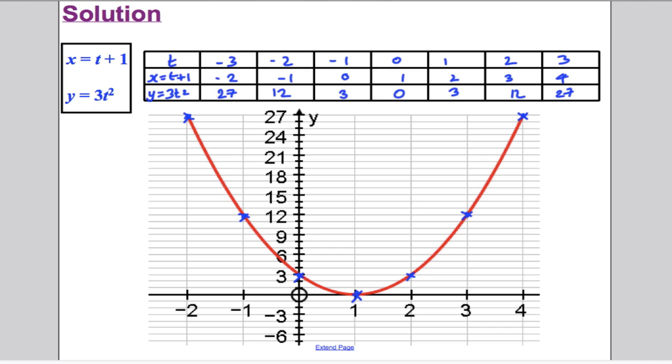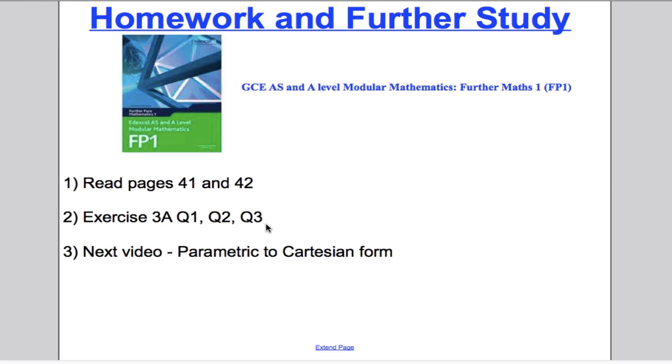That's it for this video. All we've done so far is introduce the idea of parametric functions or equations. That is when x and y are given as a function of a third parameter, which we usually call t. We have seen that by substituting in values of t, we can find pairs of x and y coordinates, plot them, and then get the graph from the parametric form. Just to consolidate, I suggest you read pages 41 and 42 and do exercise 3a in the book, questions 1, 2 and 3. Then tune in to the next video where I would be able to convert a parametric equation into a Cartesian form. Thank you for watching.